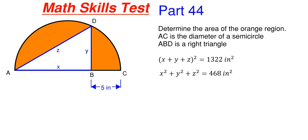This will be our 44th part in the series and what we have going on here is that we have to determine the area of the orange region shown inside this semicircle. We are told that A to C is the diameter of our semicircle and triangle ABD is a right triangle with the right angle forming at B. We are also given some information relating the sides of the triangle X, Y, and Z by two equations, and we are also shown that the distance from B to C is five inches.